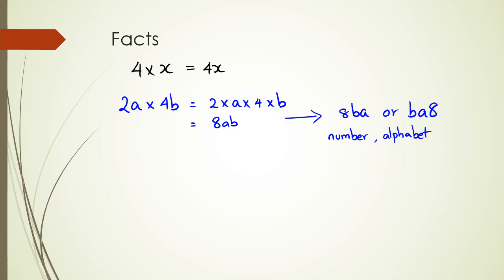So if you do write this as 8ba you're not wrong, but in maths we write it as 8ab. Now what about division? If you are doing something like 3x divided by 5, we just write it as a fraction form, 3x over 5.